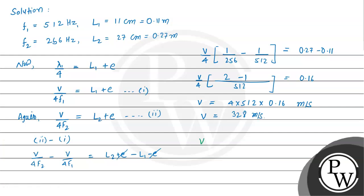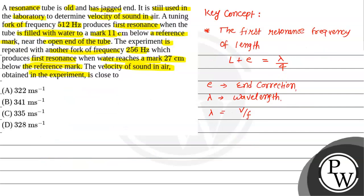So finally the velocity of air will be 328 meter per second. And if you see the options given then we can say that option D is the correct choice. I hope you understood the solution. Thank you.